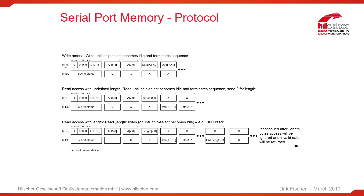You see the MOSI line — master out slave in — and the MISO signal — master in slave out. First you have to send a command consisting of a command byte where the MSB specifies the access type: if we have a write access, the MSB is zero. The rest of the command is the address to be written. So we have three bytes — the command, then two address bytes — and after this address we can immediately start to transfer the data to be written.